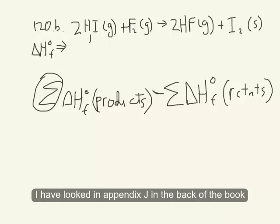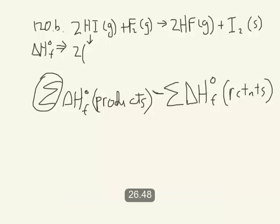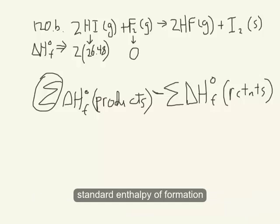I have looked in appendix J in the back of the book, and I found that hydrogen iodide gas has a standard enthalpy of formation of 26.48. Fluorine gas, I know, is the elemental form of fluorine, so it will have a zero standard enthalpy of formation.